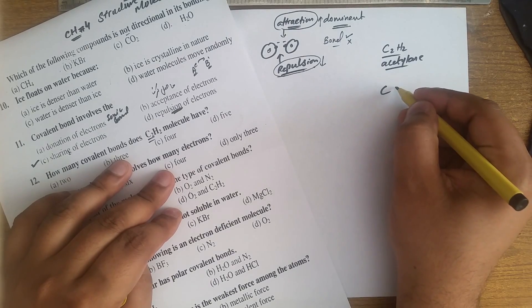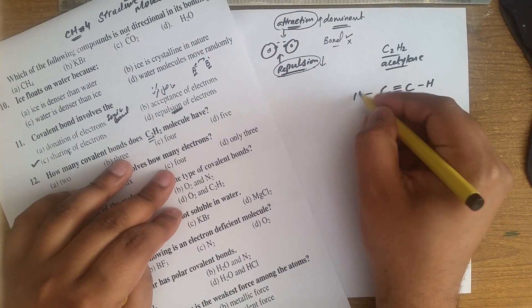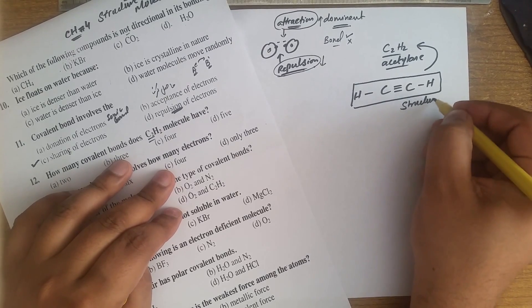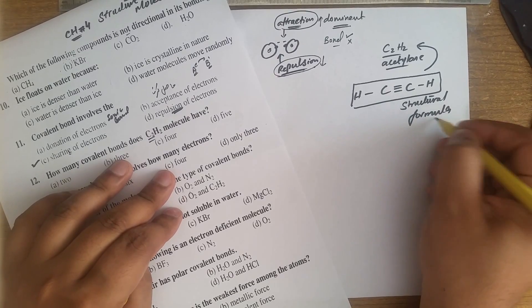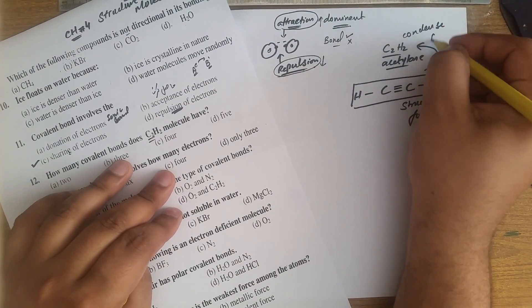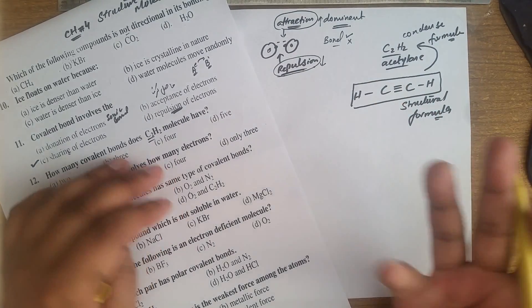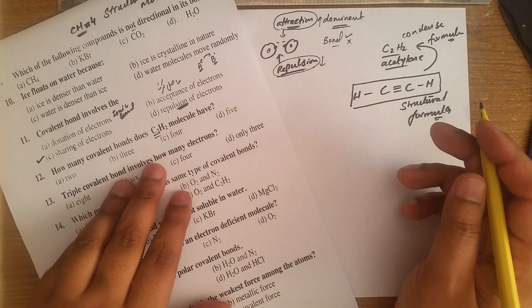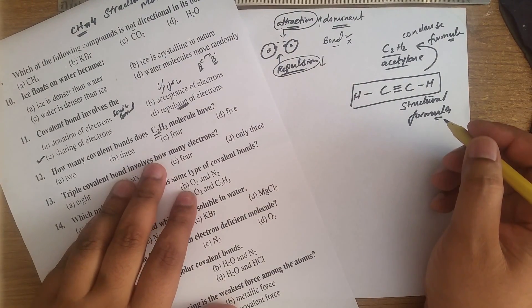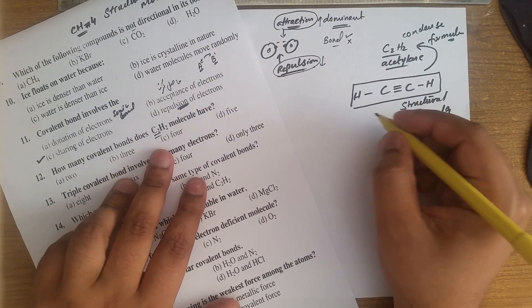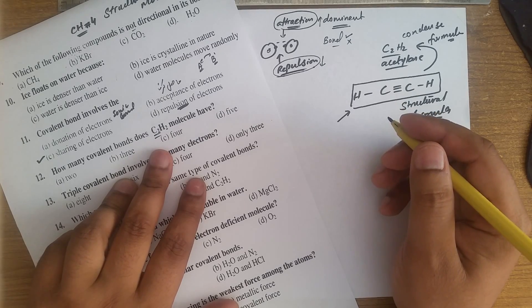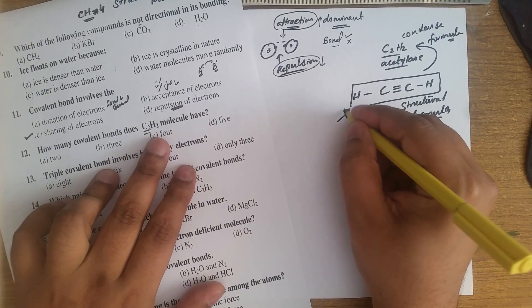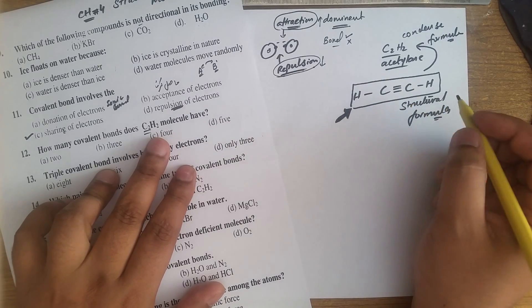Acetylene has two carbon atoms. That is the structural formula of this molecule, and that is the condensed formula. The question about how many covalent bonds acetylene has has always been a source of confusion for students.